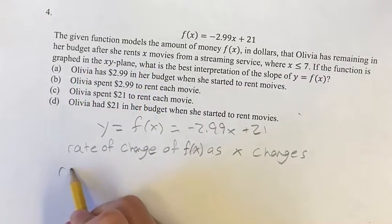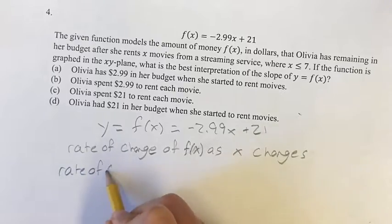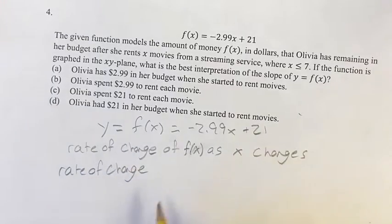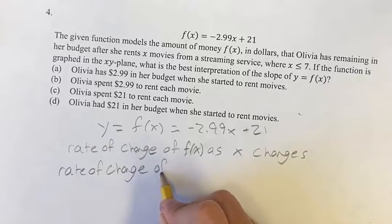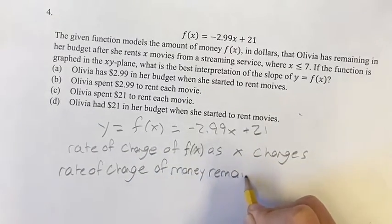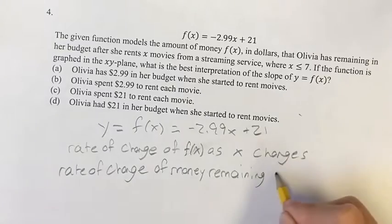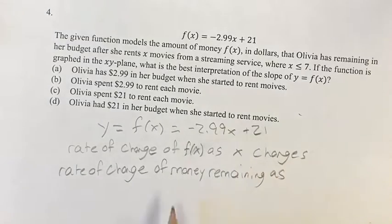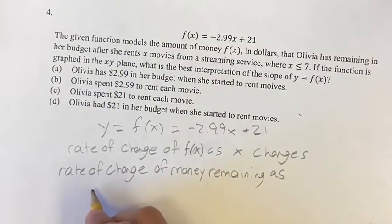Okay, so the rate of change of f(x) is the amount of money remaining. Rate of change of money remaining as x changes, as the number of movies rented changes.